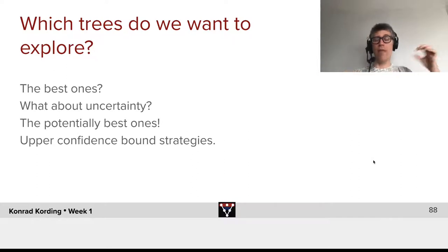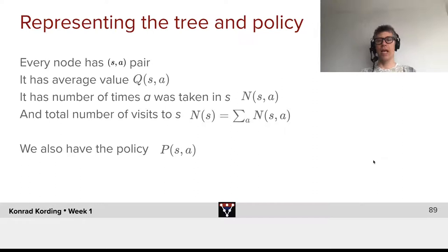And that is something that we can view as an upper confidence bound strategy. Like every potential move, if we think about it, there's kind of a feeling that we will have that we will represent using a neural network about how good they are, and ultimately also how uncertain we are about how good they are. And we want to focus our effort on the moves that could be the best moves, and that is where the upper confidence bound, the UCB strategies, where they come from.